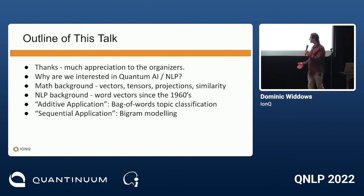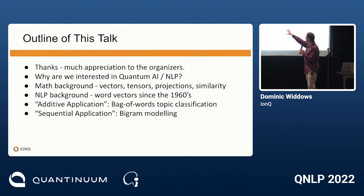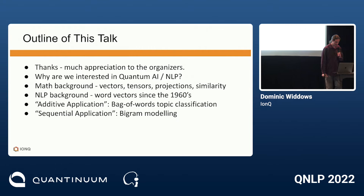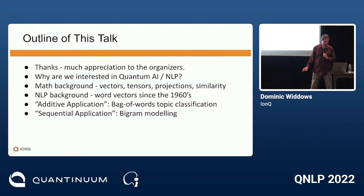Today I'll talk about: why we're interested in quantum AI and NLP — that'll go fairly quickly since we're all interested. Then mathematical background: vectors, tensors, projections, similarity — again quick. Language background — interesting stuff on how long we've been using vectors. Then the main meat: near-term advances, composition with qubits. We have an additive application, a sequential application for bag-of-words topic classification, one for bigram modelling, and one for ambiguity resolution.